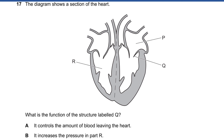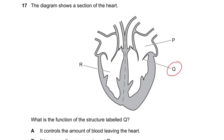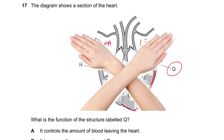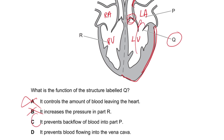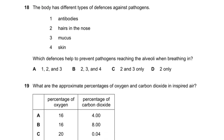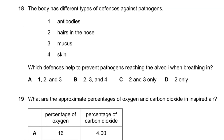Question 17: The diagram shows a cross section of the heart. The bigger thicker wall is the left ventricle. To remember sides: wherever your right hand is points to the left side on the diagram. The structure labeled Q — it controls backflow prevention. It does not control amount of blood leaving the heart, and has nothing to do with pressure in part R. It prevents backflow of blood, so the answer is C.